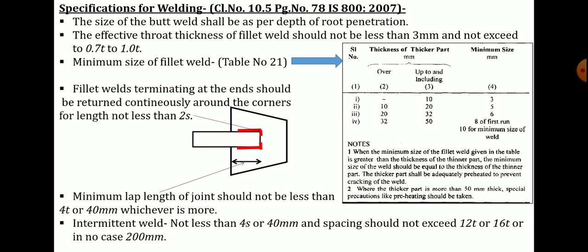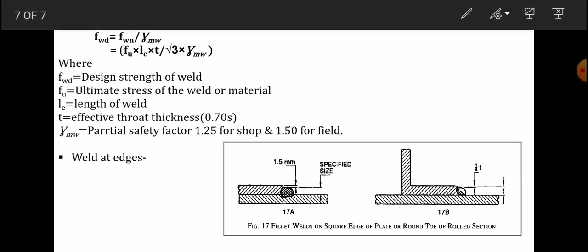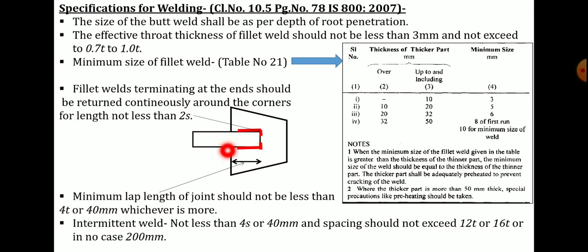Fillet welds terminating at the end should be returned continuously around the corners for a length not less than 2 times the size of welding. For a trapezoidal gusset plate where welding ends at an edge, the weld must continue for a length of 2 times the weld size at those edges. Minimum lap length for a joint should not be less than 4 times T or 40 mm, whichever is more, where T is the thickness of the thinner part.